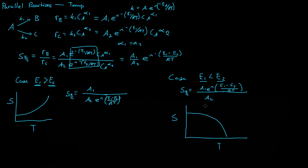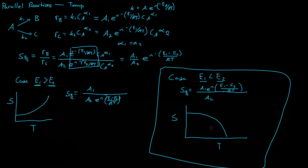One thing that needs to be noted: when you decrease the temperature to increase selectivity in this case, you're also slowing down the rate of production. There will come a point where you won't get anything produced because there won't be enough kinetic energy in the molecules to actually have a reaction occur. So as you decrease the temperature you're also decreasing the rate of production of your product — you have to find a counterbalance between high selectivity with low product count, high product with poor selectivity, or somewhere in between.